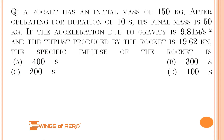A rocket has an initial mass of 150 kg. After operating for a duration of 10 seconds, its final mass is 50 kg. If the acceleration due to gravity is 9.81 m/s² and the thrust produced by the rocket is 19.62 kN, the specific impulse of the rocket is: (A) 400 seconds, (B) 300 seconds, (C) 200 seconds, or (D) 100 seconds.